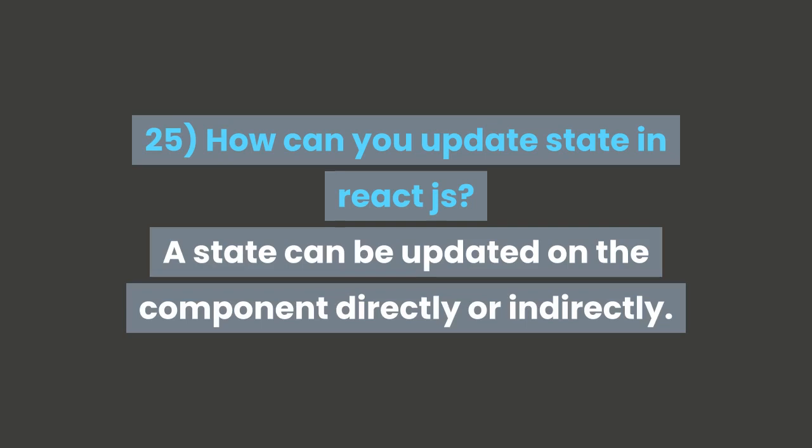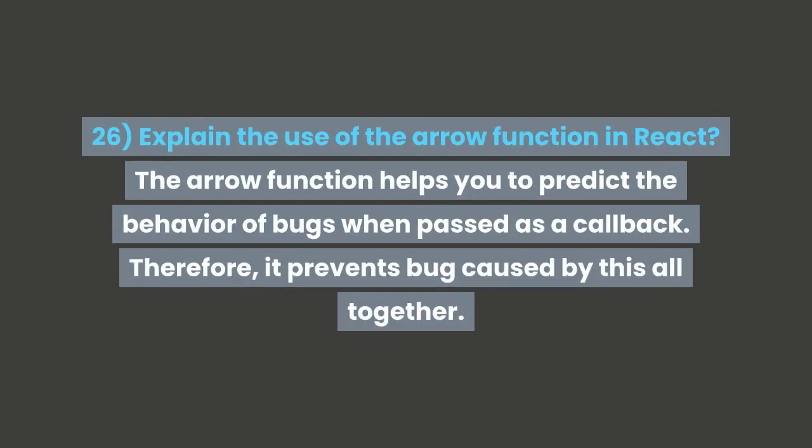Question 26: Explain the use of the arrow function in React. The arrow function helps you to predict the behavior of bugs when passed as a callback. Therefore it prevents bugs caused by 'this' altogether.